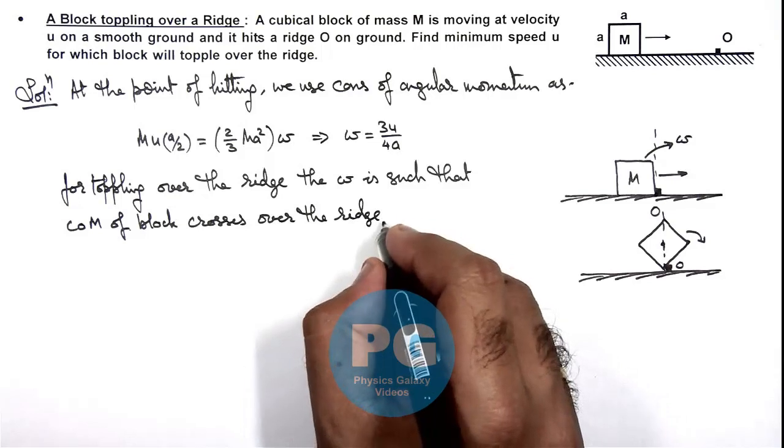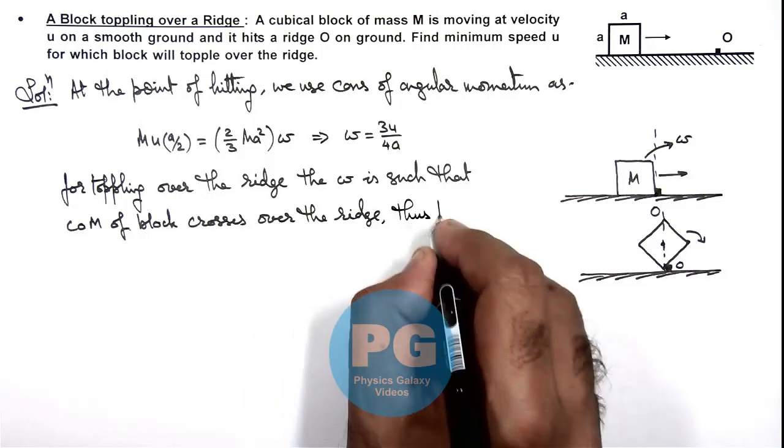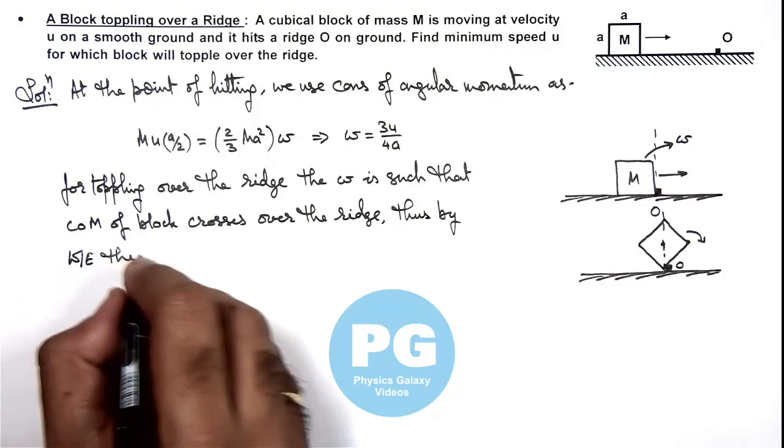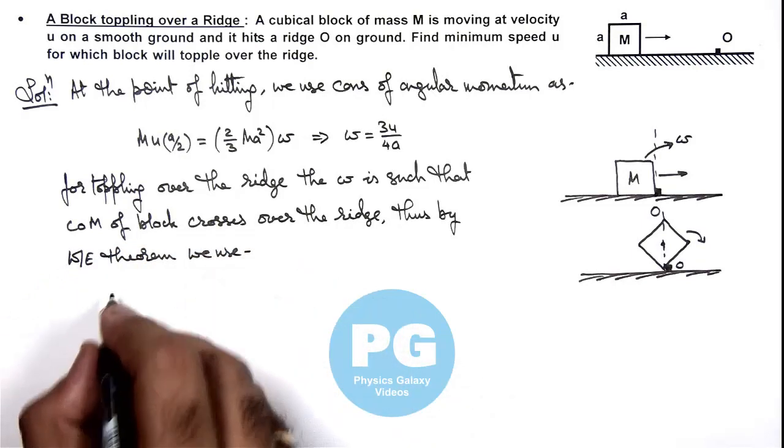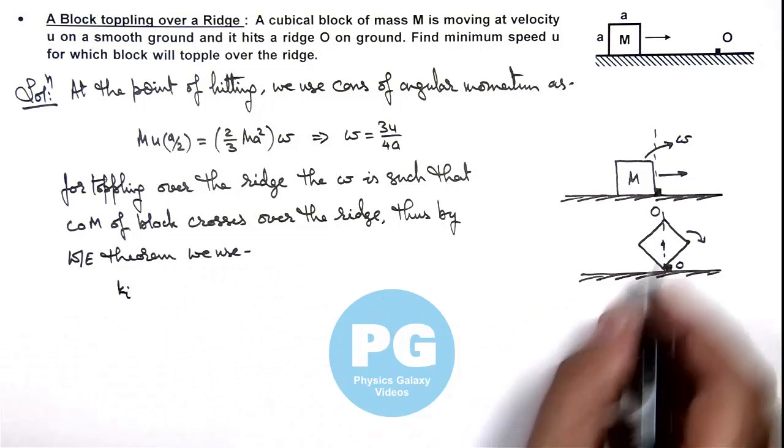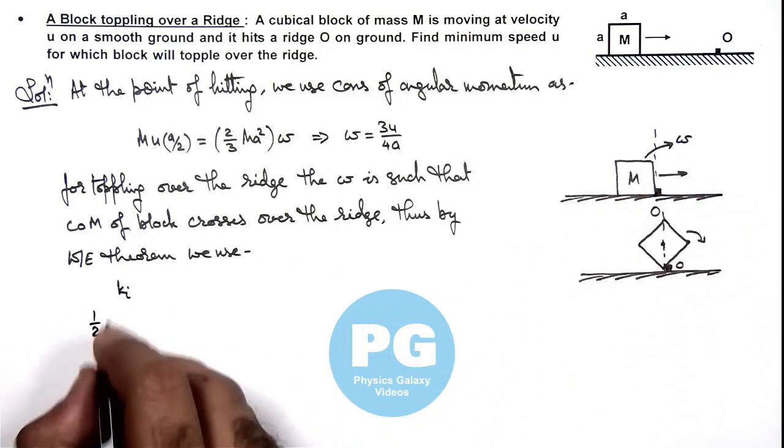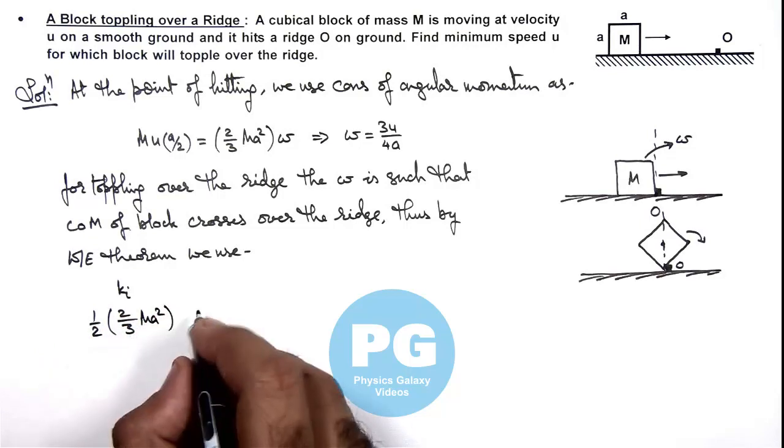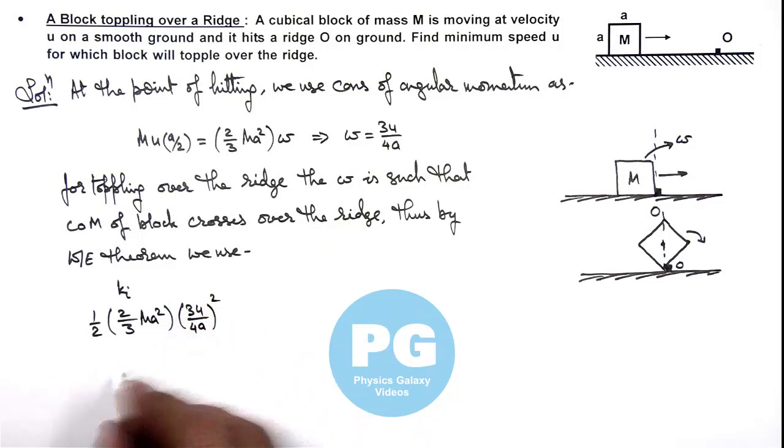So here we can write, thus by work-energy theorem, we use here the initial kinetic energy of this block when it started rotation is 1/2, its I is 2/3 M a², multiplied by omega² is (3u/4a)² minus.